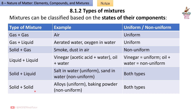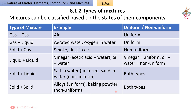Solid + Solid: Alloys — Uniform; Baking Powder — Non-Uniform. Alloys are special uniform mixtures of metals, e.g. Bronze (Copper + Tin), Brass (Copper + Zinc), Stainless Steel (Iron + Chromium + Nickel).